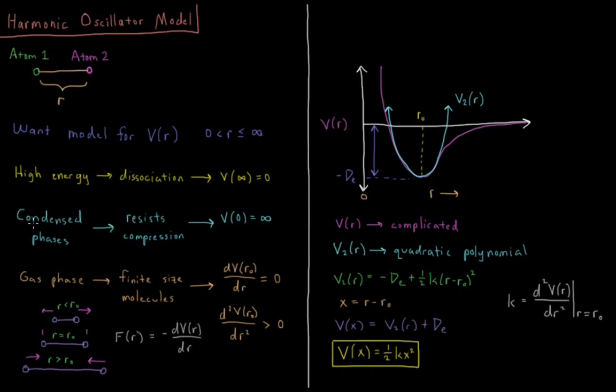So similarly, condensed phases - solids and liquids - we know when you press on them, they resist compression. So it's very hard to get them below some kind of threshold volume that they want to be at. So that implies that at short range their potential energy approaches infinity. So V(0), we can say equals infinity.